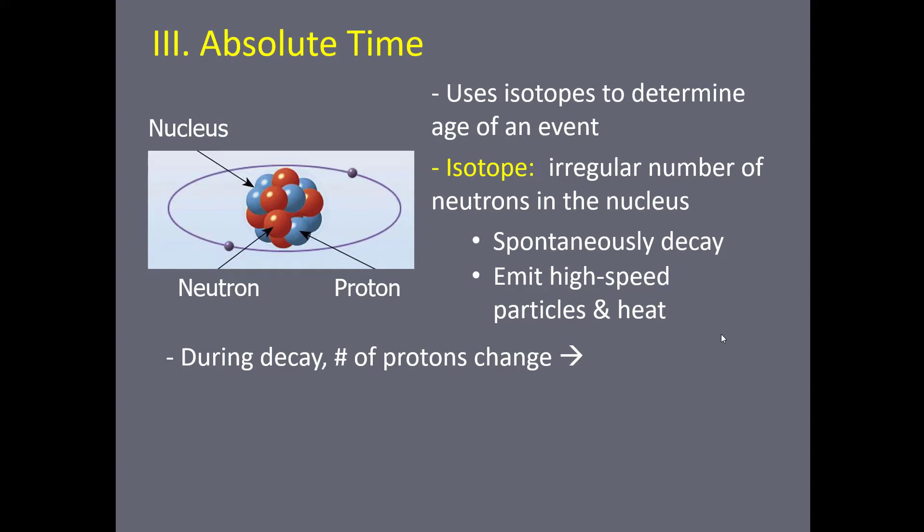What you do have to know is that during the decay, the number of protons in the nucleus changes. Remember, all atoms that have six protons in the nucleus are carbon. So if the number of protons of carbon changes during radioactive decay, the atomic number changes — and if the atomic number changes, what forms is actually a different atom.